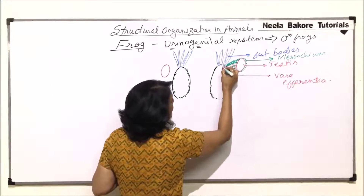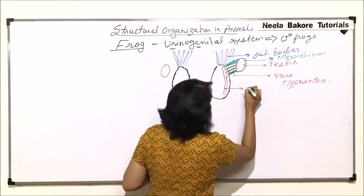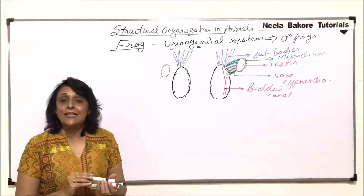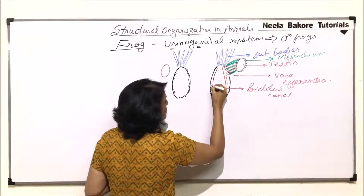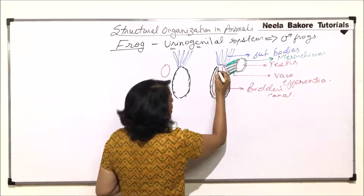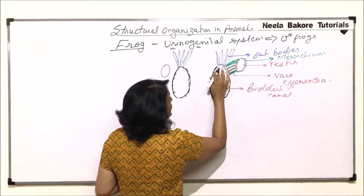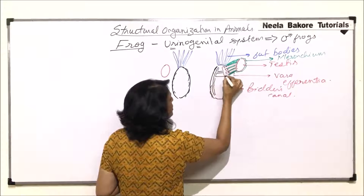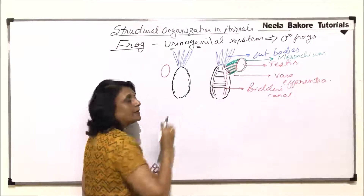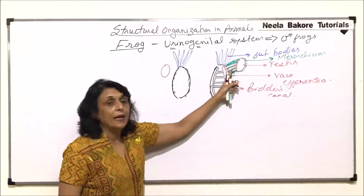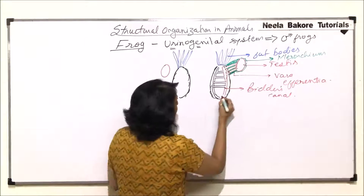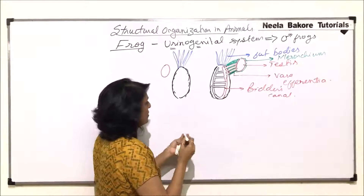This is Bidder's canal. The kidney collects nitrogenous waste by filtration through nephrons, and all that waste is collected here. Bidder's canal and the urine-collecting duct are transversely connected — one duct collects nitrogenous waste and Bidder's canal collects sperms from the testes. These two canals then join together.